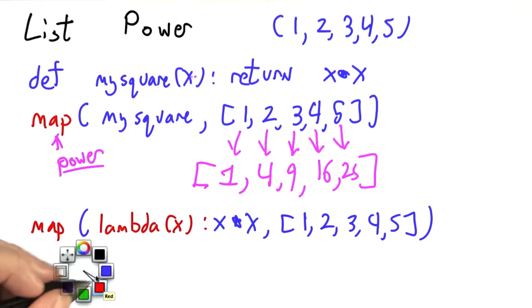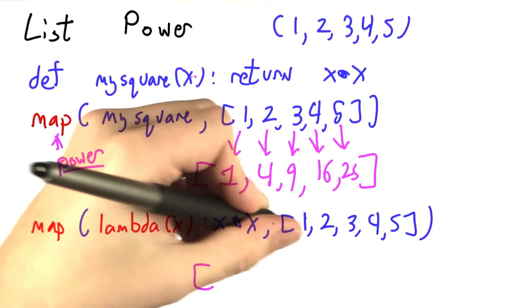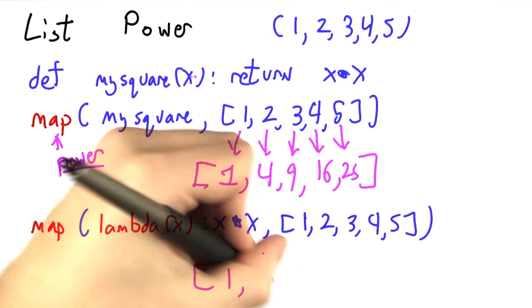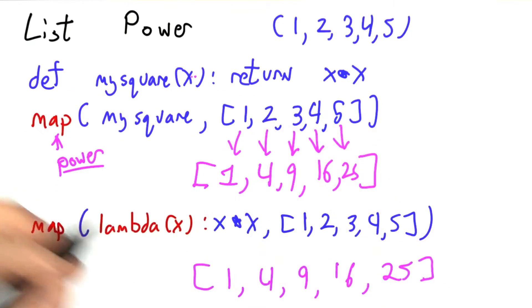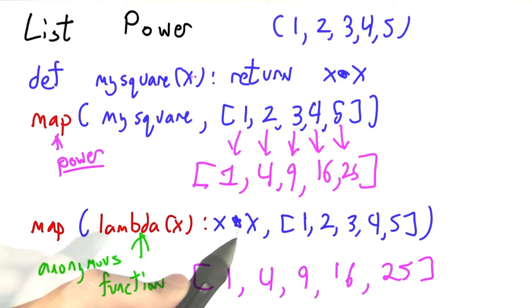This map is going to produce the same result as the previous one. 1 times 1 is 1, 2 times 2 is 4, 3 times 3 is 9, 16, 25. But I didn't need to have my square defined in advance. This use of lambda is sometimes called an anonymous function because it was an important function, but we never actually gave it a name.